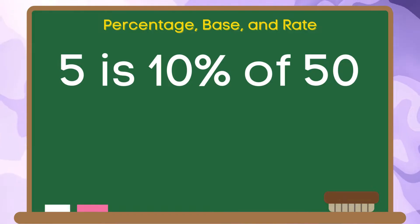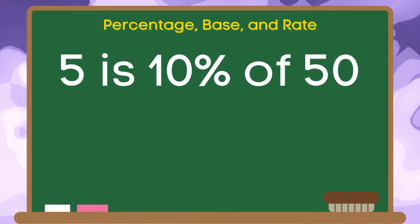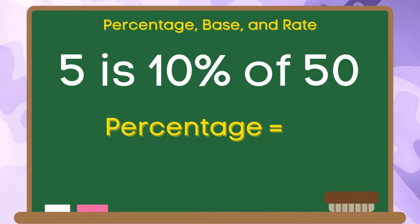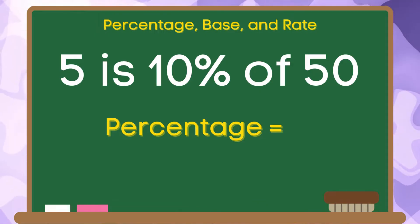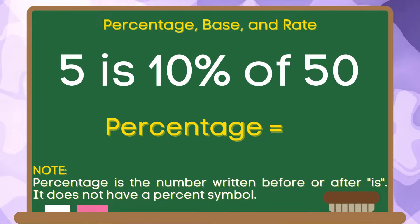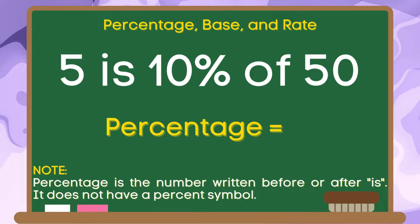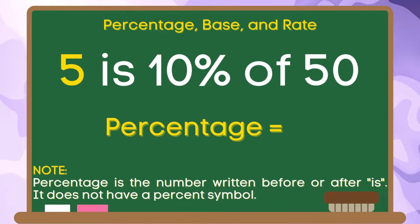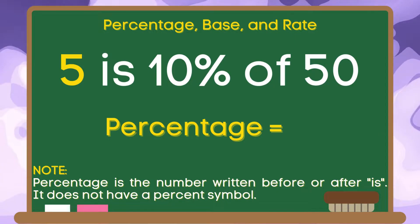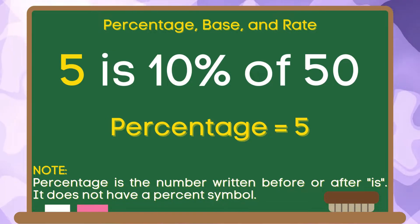Let us find the percentage, base, and rate in this example: 5 is 10% of 50. To find the percentage, remember that percentage is the number written before or after the word 'is' — it does not have a percent symbol. In this example, 5 is written before the word 'is' and it does not have a percent symbol. Therefore, 5 is our percentage.